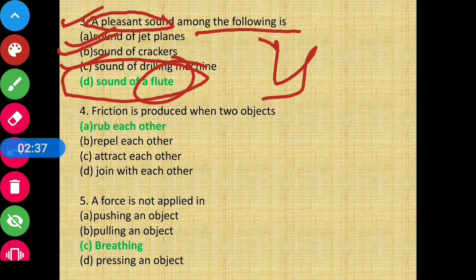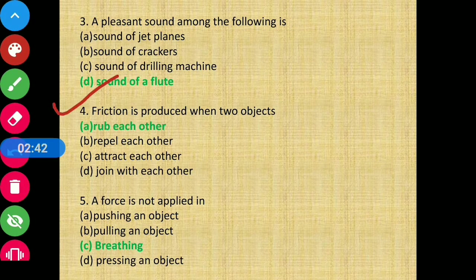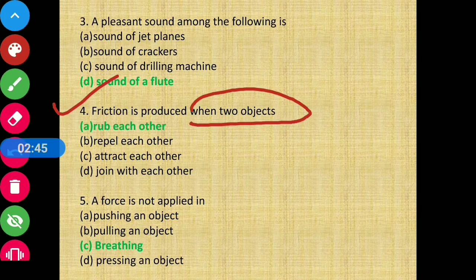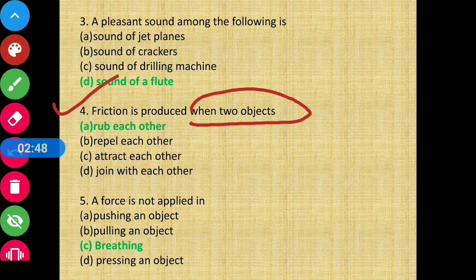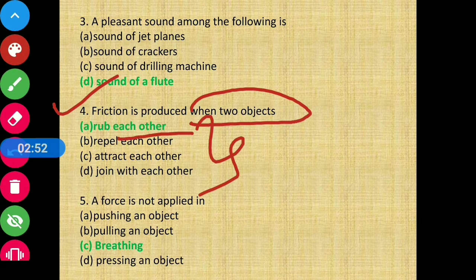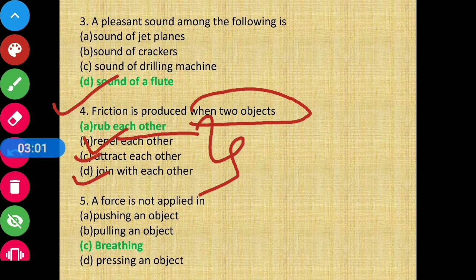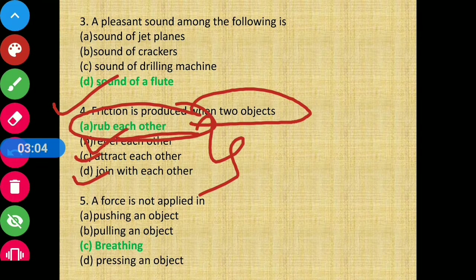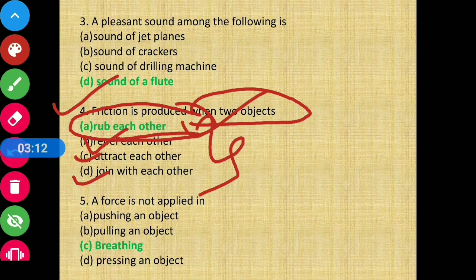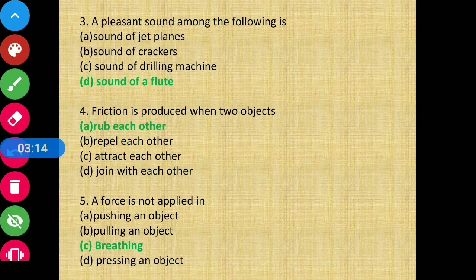Next, question number four: Friction is produced when two objects - friction produce hota hai jab do object kya karte hain? The options are: rub each other, repel each other, attract each other, or join each other. We know that friction is produced when any two things rub against each other. So in this case, option A is the correct answer.